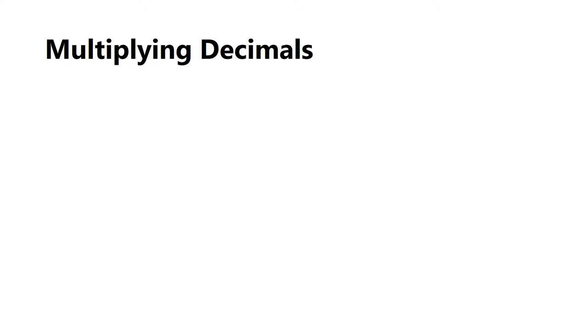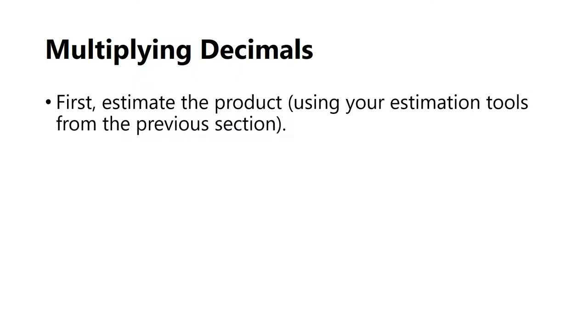So the first way we can go about multiplying decimals is by following these steps. You should be recording these steps down so you can look back at them as we work throughout the problems. The first step would be to first estimate our product using those estimation tools from our previous section.